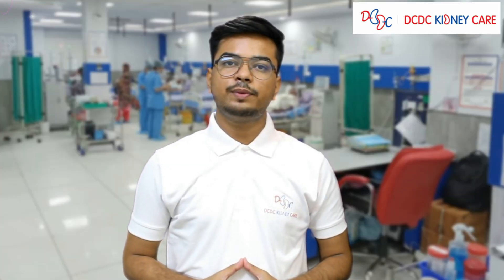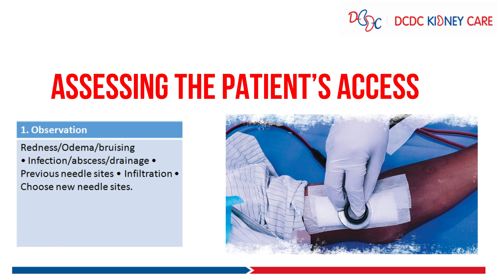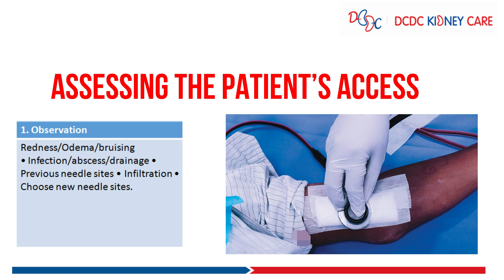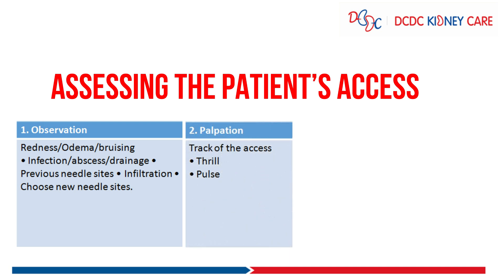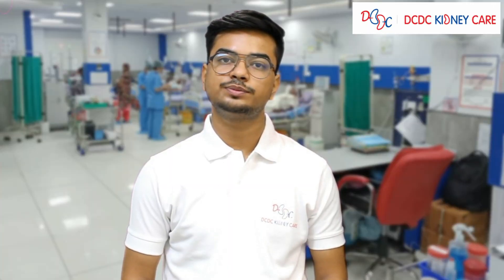Coming to the assessment part of the AV fistula, one needs to observe for signs of redness, infection, abscess, drainage, previous placement sites, and infiltration. Palpation needs to be done to track the access for its pulsation and thrill. Auscultation is done with a stethoscope to listen for the bruit and thrill of the fistula. A well-functioning fistula has a continuous bruit, while an obstructed fistula can have a discontinuous, pulse-like bruit.